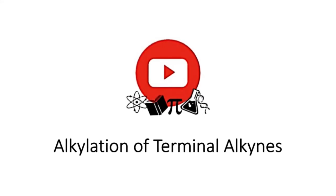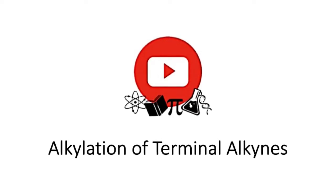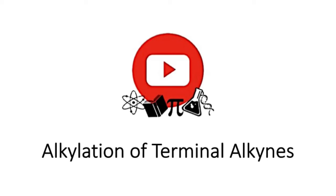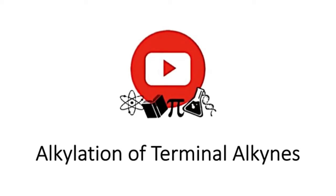So in this video, we are going to be talking about alkylation of terminal alkynes. The process of alkylation is simply putting an alkyl group or an R group onto something, and in this case, we're going to be putting it onto a terminal alkyne.